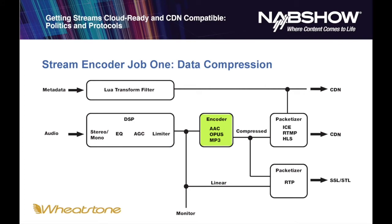The most popular format for data compression today is AAC. AAC has replaced MP3, though MP3 is still popular. Opus is a free encoder which sounds wonderful, but unfortunately is not supported by all players in the streaming world. The output of the encoder — which is now a compressed signal — is then packetized. Probably the three most popular formats for packetizing and sending a stream today are IceCast, RTMP, which is the original Adobe Flash format (Flash has been obsoleted, but RTMP as a protocol is still used widely).